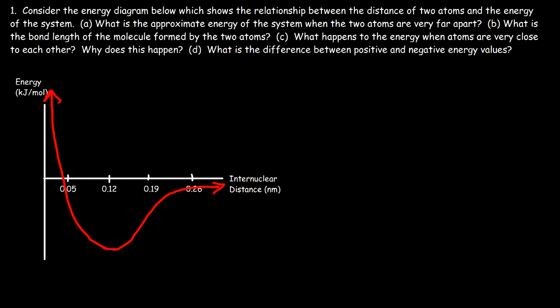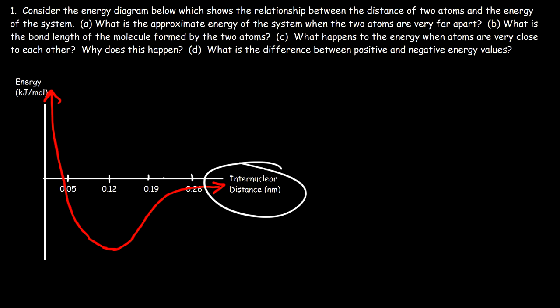We have this energy diagram which shows the relationship between the potential energy of the system and the internuclear distance — that is, the distance between the two atoms, specifically between the centers or nuclei of those atoms. Let's look at part A: what is the approximate energy of the system when two atoms are very far apart?